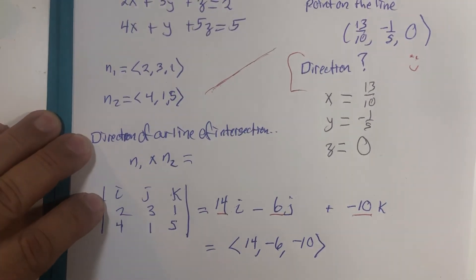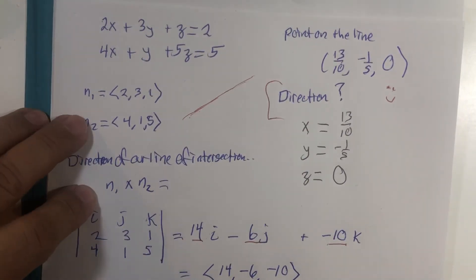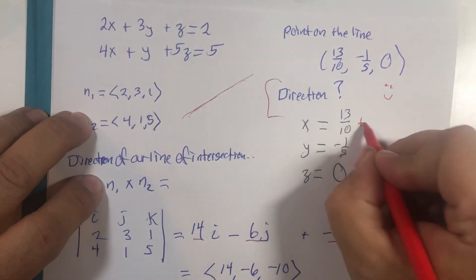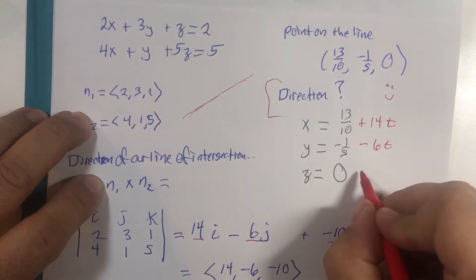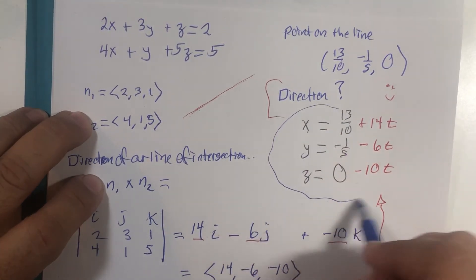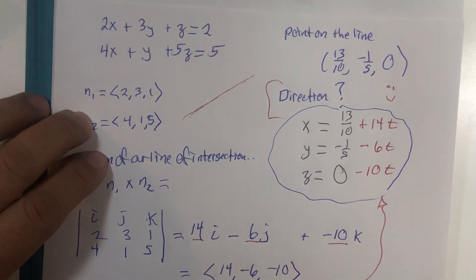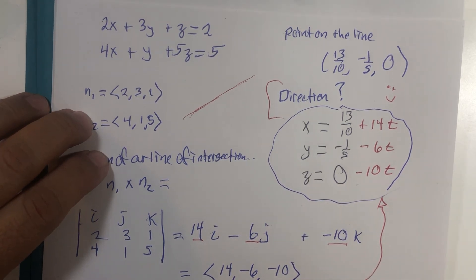That is the direction this line is going. Multiplying by −1 gives the opposite direction on the same line, which could also be used. With the direction vector in hand: x is increasing by 14, y is decreasing by 6, and z is decreasing by 10. We now have the complete parametric equation of the line where the two planes intersect. That was a good workout — we could have found other points on the line, but finding one is all that was required.